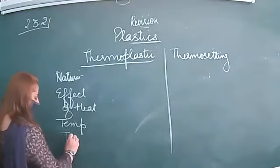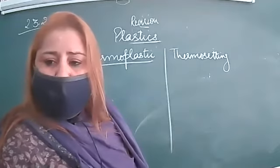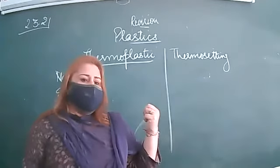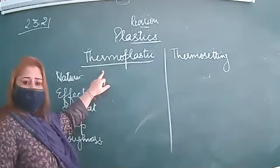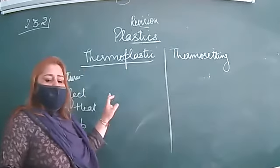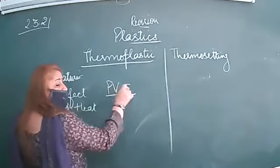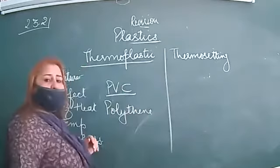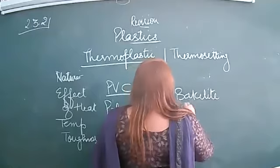Another parameter is toughness. Thermoplastic is less tough and elastic, whereas thermosetting is more tough and more rigid. Thermoplastic can be recycled because once molded, we can remold it again by heating. Thermosetting plastics can't be recycled. Examples of thermoplastic are PVC — polyvinyl chloride — and polythene. Examples of thermosetting plastic are bakelite and melamine.